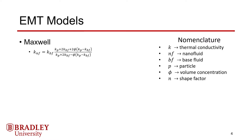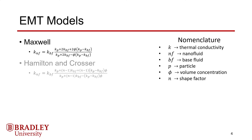Maxwell developed the earliest EMT model. It assumes that particle interactions with the base fluid molecules have negligible effects and that the particles are spherical and evenly distributed in the fluid. The Hamilton and Crosser model is very similar to the Maxwell model, but uses a shape factor denoted by N to more accurately predict the effects of different particle shape. This shape factor is 3 for spherical particles and 6 for cylindrical particles. In the results, a shape factor of 6 was assumed, as the data did not specify particle shape, and if spherical particles were assumed, the model would have been redundant with the Maxwell model.